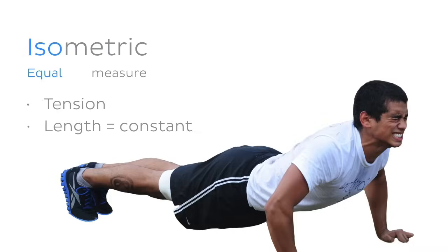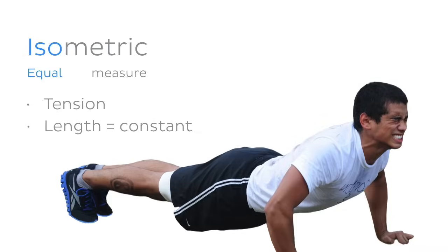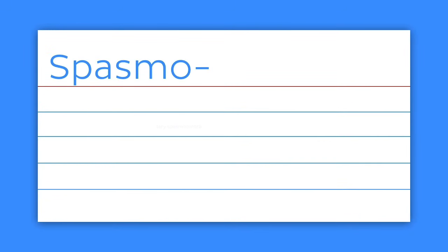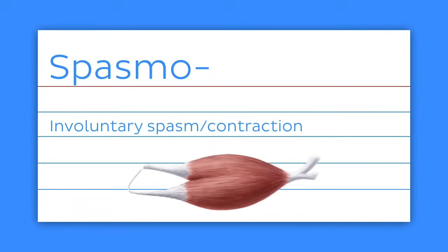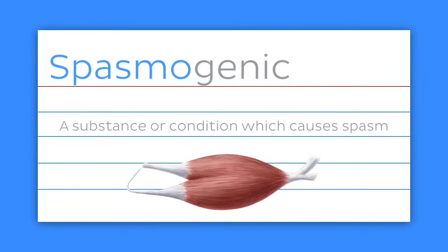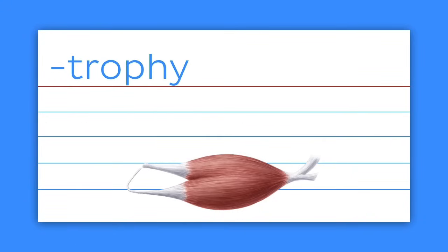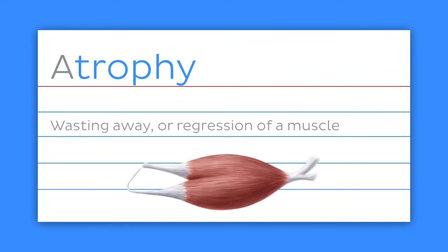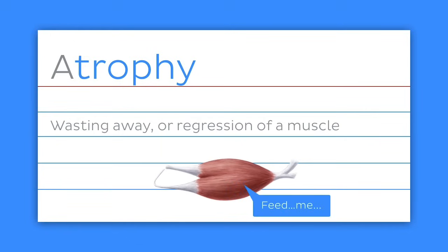This is clearly not my favorite thing to do in the world. Okay, the final stretch — let's wrap this up with a few word elements that are especially useful in a clinical setting. First up is spasmo, which refers to involuntary spasm or contraction of muscle. A spasmogenic substance or condition is one which causes spasm. Next is the suffix -trophy, often used in reference to muscles, meaning growth or development. For example, atrophy refers to wasting away or regression of a muscle, usually due to a disorder or disuse.